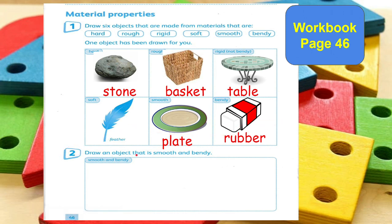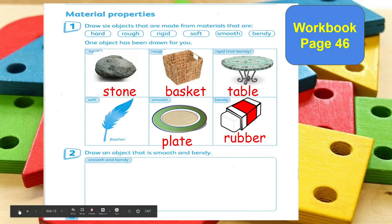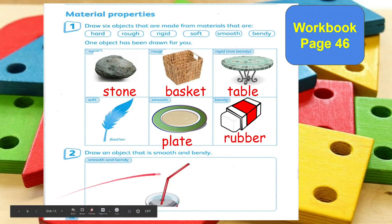For number 2, draw an object that is smooth and bendy — combining two material properties. A classic straw is a good example; it has both a smooth and bendy material.